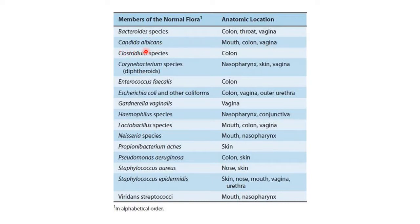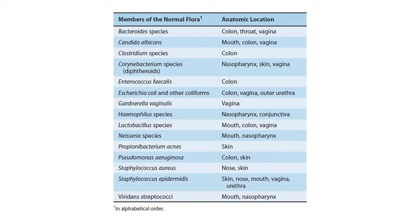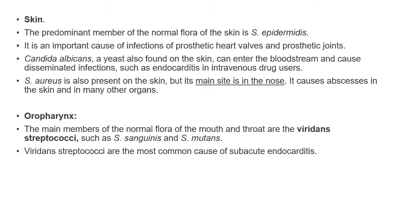Examples of normal flora members include: Candida albicans found in mouth, colon, and vagina; Clostridium species in the colon; Corynebacterium species in nasopharynx, skin, and vagina; Haemophilus species in nasopharynx and conjunctiva; Propionibacterium acnes which causes acne, found on skin; Staphylococcus aureus in nose and skin; Staphylococcus epidermidis on skin, nose, mouth, vagina, and urethra; and varied streptococci in mouth and nasopharynx. Try to remember at least five to six with their anatomic location.